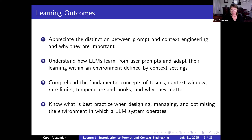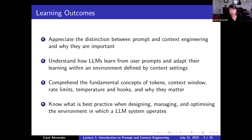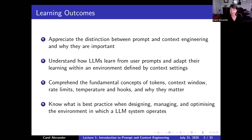Then we cover fundamental concepts — things like tokens, not cryptographic tokens but AI tokens, which are totally different. Context windows, very important. Rate limits, temperature hooks — the terminology really matters. And then knowing what best practice is, just to summarise it. Parts two and four are pretty short, and most of the meat is in parts one and three.